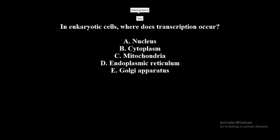In eukaryotic cells, where does transcription occur? A. Nucleus. B. Cytoplasm. C. Mitochondria. D. Endoplasmic reticulum. E. Golgi apparatus. The correct answer is Nucleus.